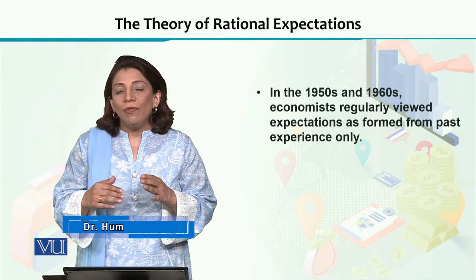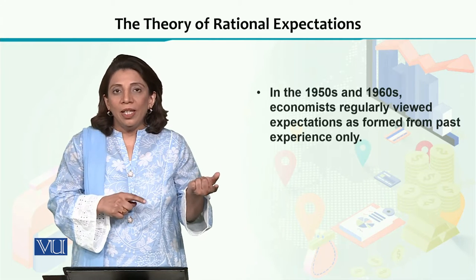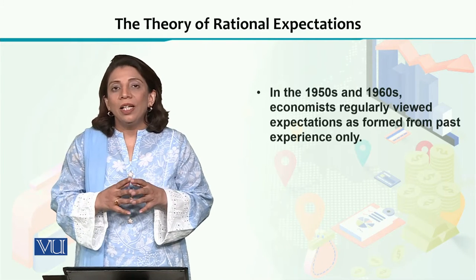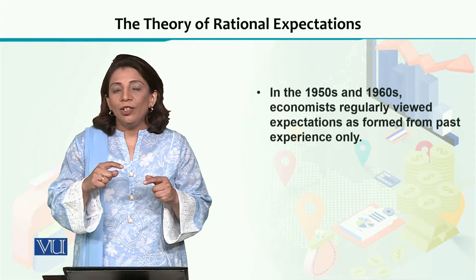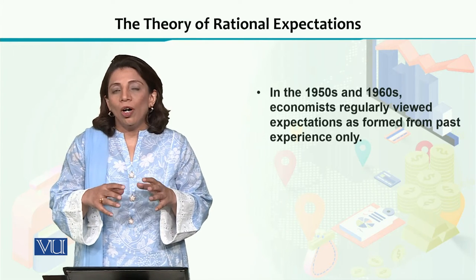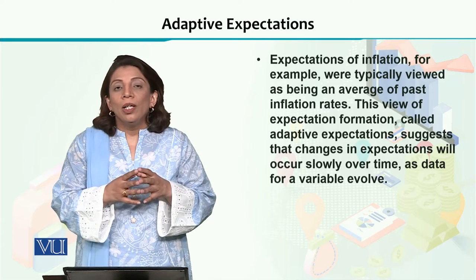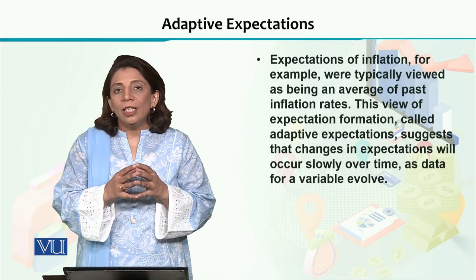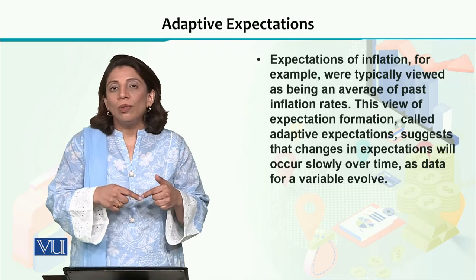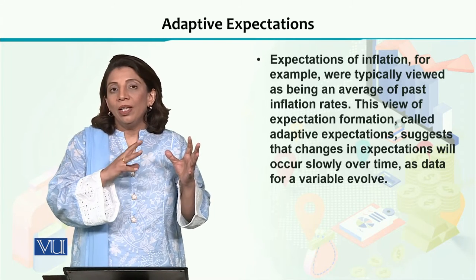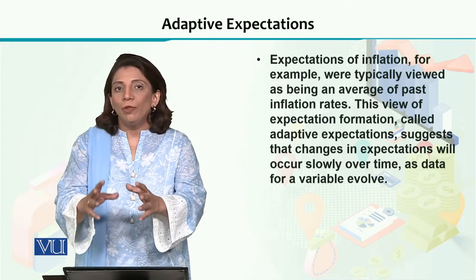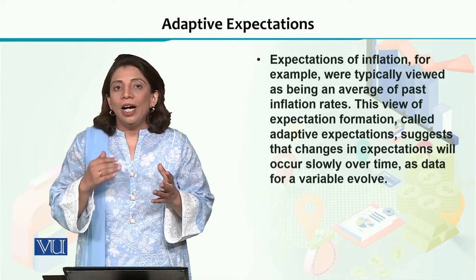Economists have always considered that we need to look at the previous data — the past values, the past prices of a certain stock — and that would help us in understanding how the price of this particular stock will be determined, or what is going to be the price of the same stock in future. If we want to know what will be the expected price of a certain stock in the next year, we need to look back at the historical data to assess what the previous data is telling us. This particular concept is called adaptive expectations.